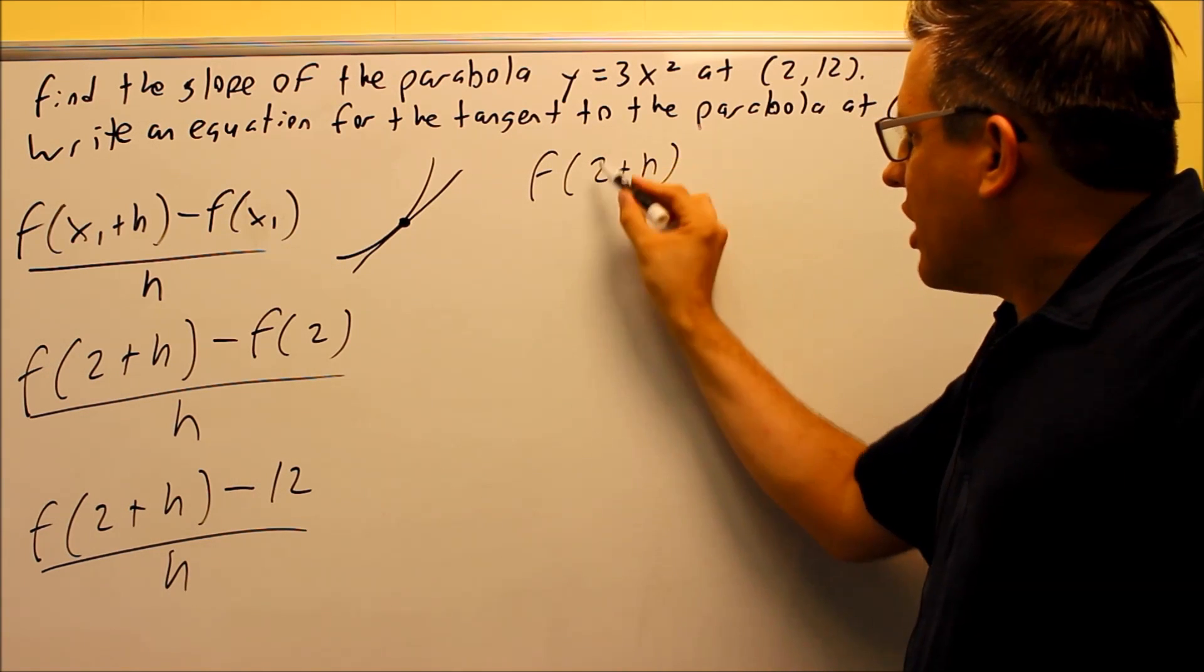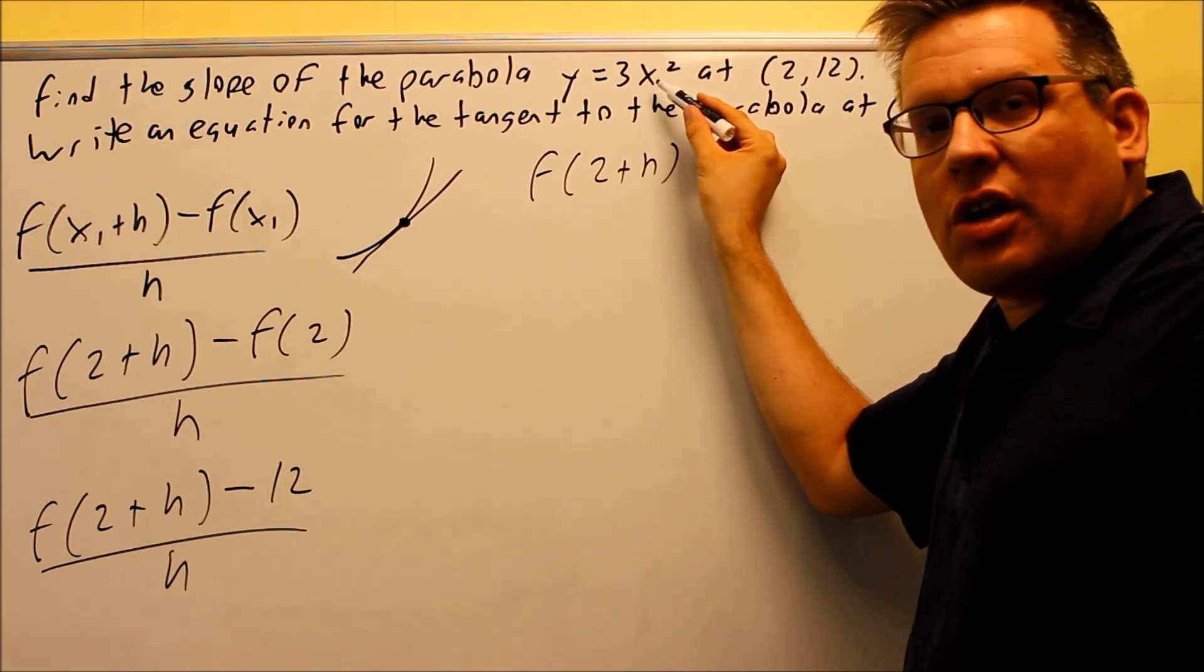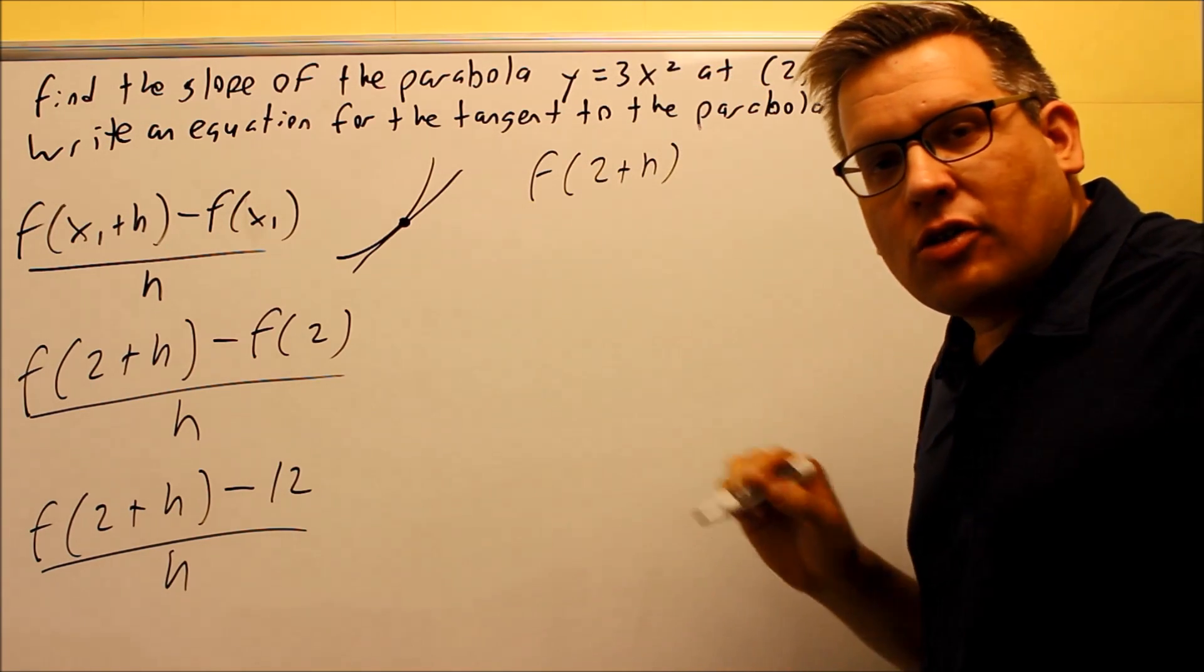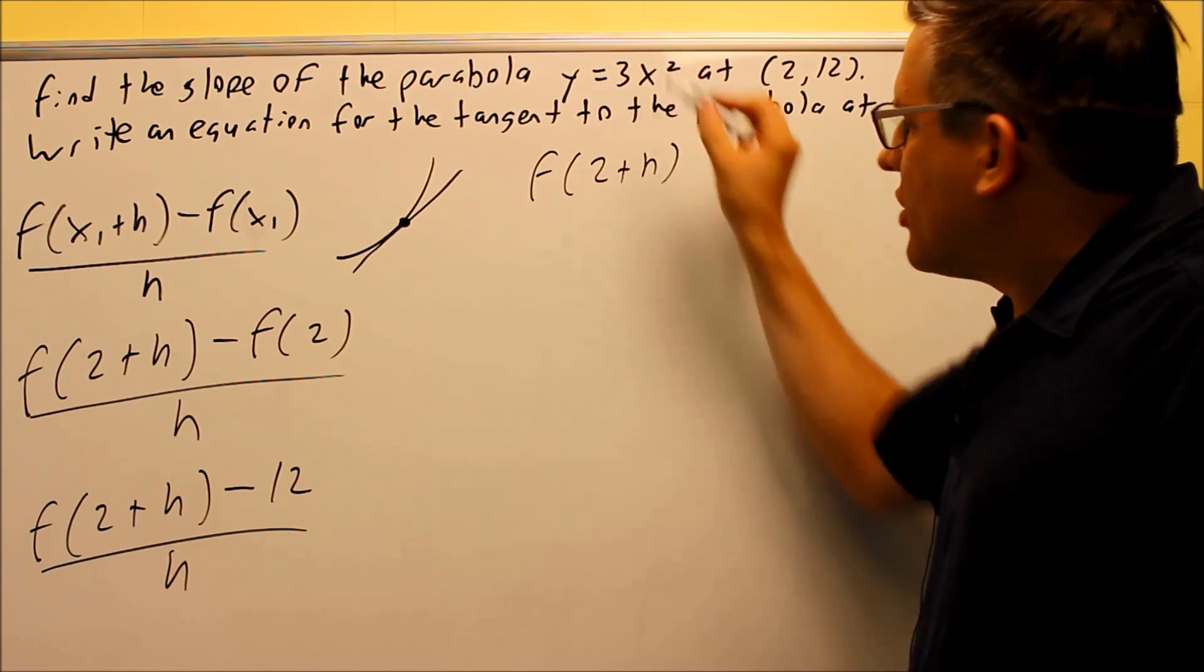What this means is this is telling us you want to put 2 plus h in any x that you see in the original one. The y can be interpreted as f of x. So this is saying put this in in place of the x.